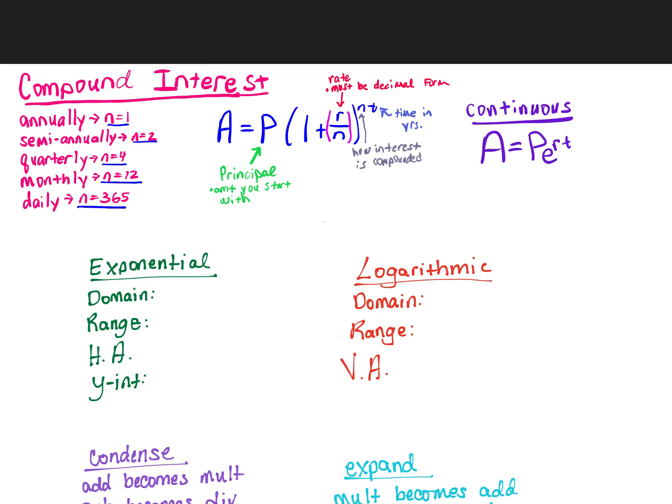If you're using compound interest that's compounded annually, semi-annually, quarterly, monthly, daily, or weekly — any of those — you're going to use A = P(1 + R/N)^(NT), where N represents how often it's compounded.